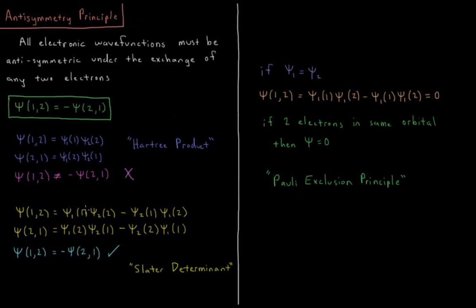So this is the case for a two-electron system. The solution we're going to use in general is called a Slater determinant, which we'll discuss in the next video.